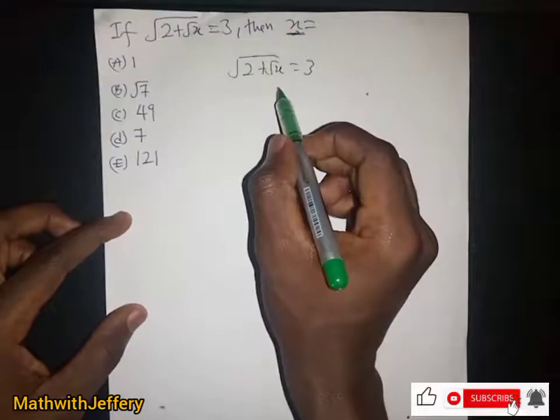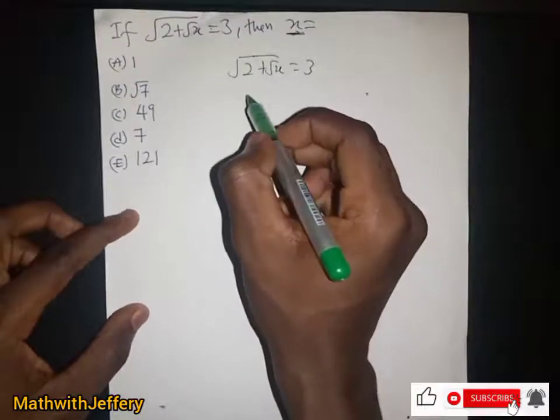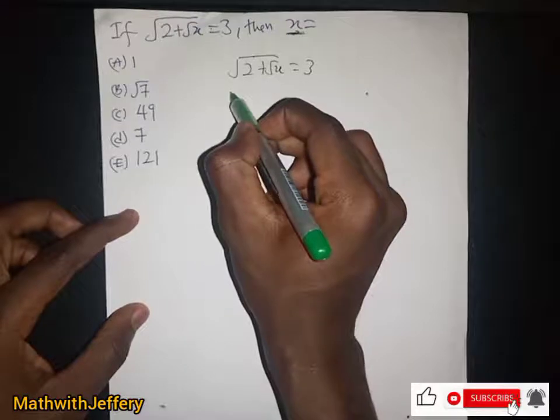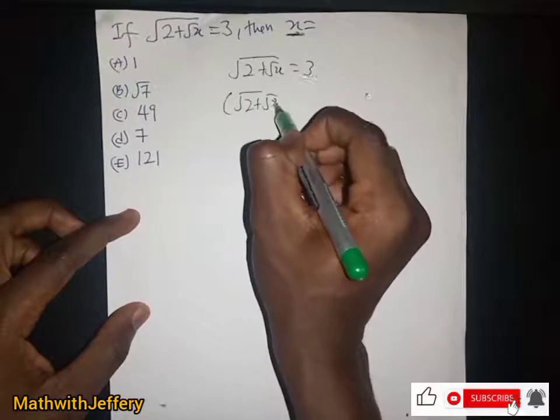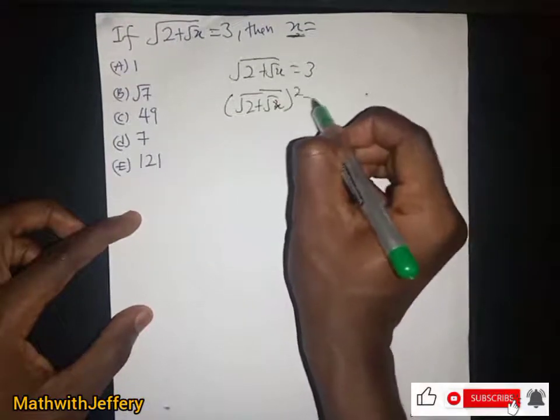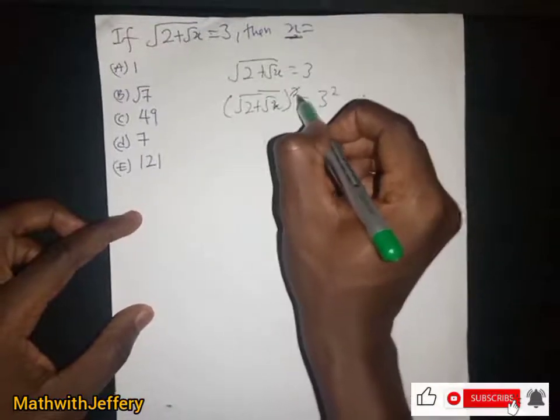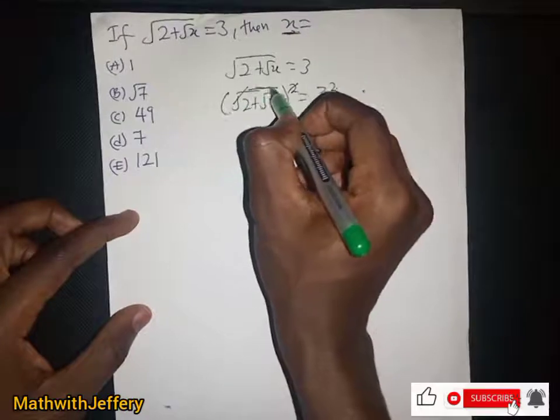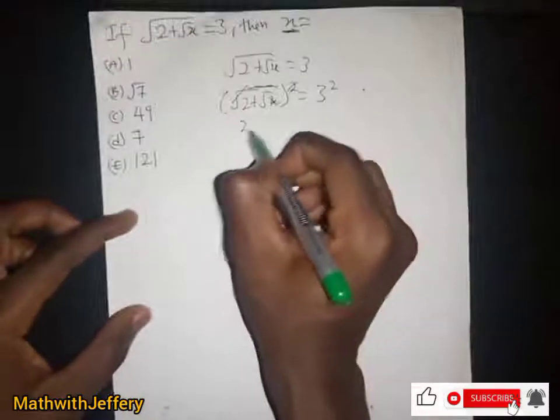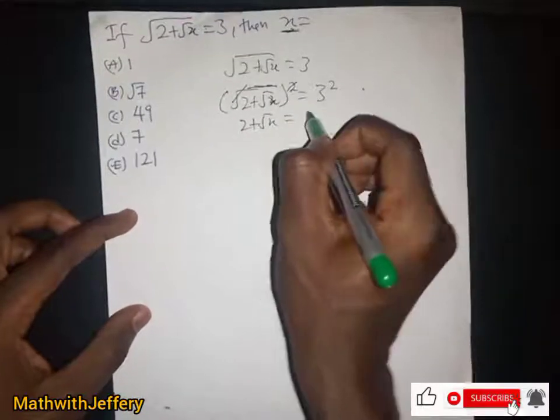So in order for us to find x, what we have to do is to square both sides. We square this side, then also square this side, then we get rid of the square root here. And then we have 2 plus root x here being equal to 9.